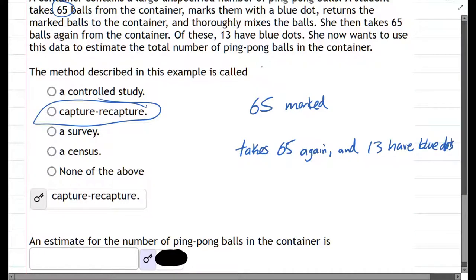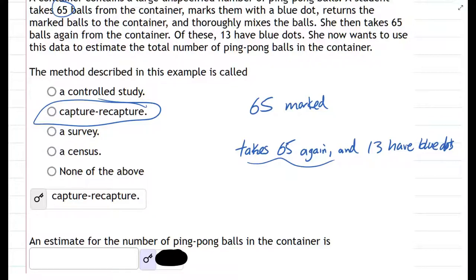If we took 65 again and all 65 had blue dots, most likely there would be 65 balls total. If we took 65 again and about half of them had blue dots, then you would expect that about twice that number would be the total value.